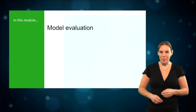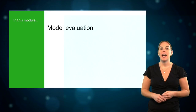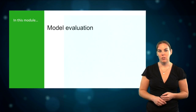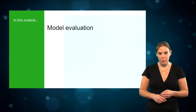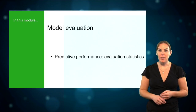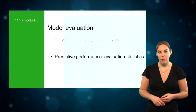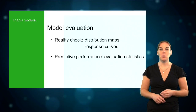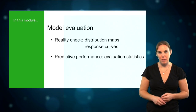There is a variety of different outputs that your species distribution model will produce, and that you can evaluate to decide whether your model is valid. While the focus in model evaluation is often on the predictive performance of a model, which can be measured by a variety of evaluation statistics, it's important to also do a reality check of the visual outputs such as the predicted distribution map and the response curves of the environmental variables.